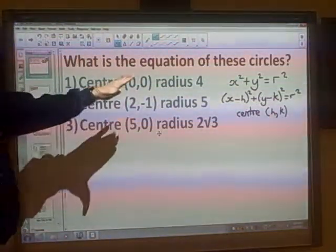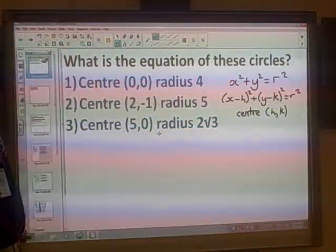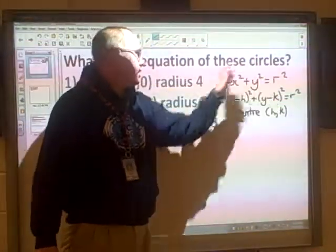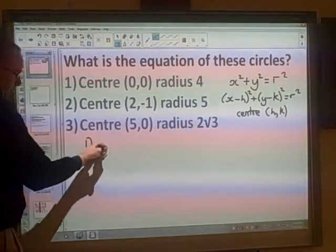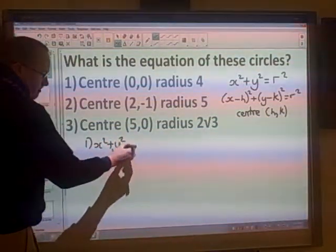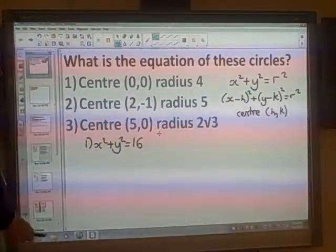So the first formula, you can see, is (0,0). So all we just do is substitute in that. So we've got x² + y². R is 4, so we get 16. So number 1, x² + y² = 16.